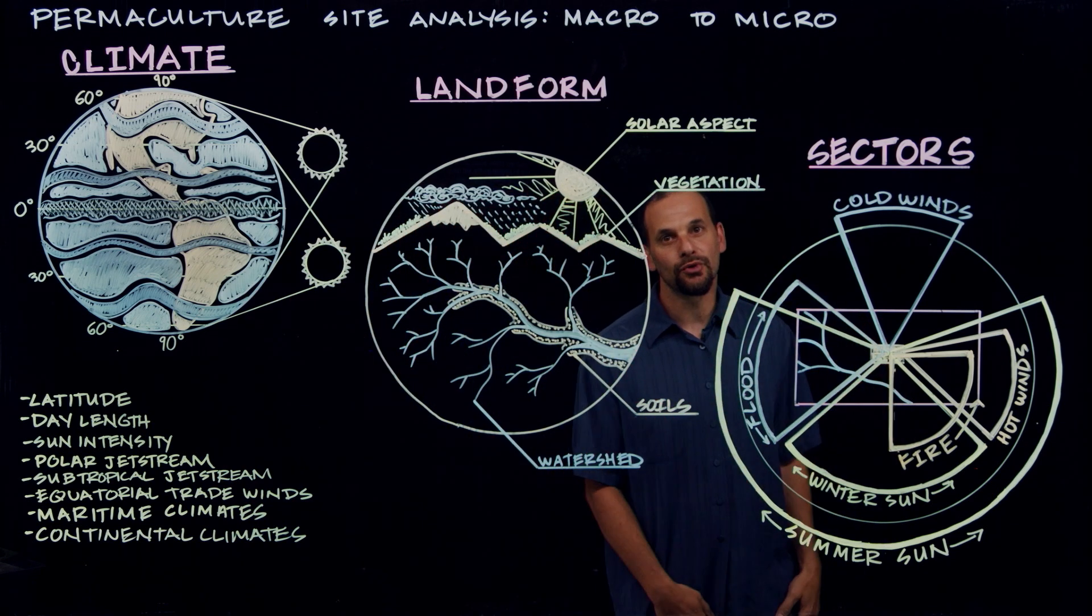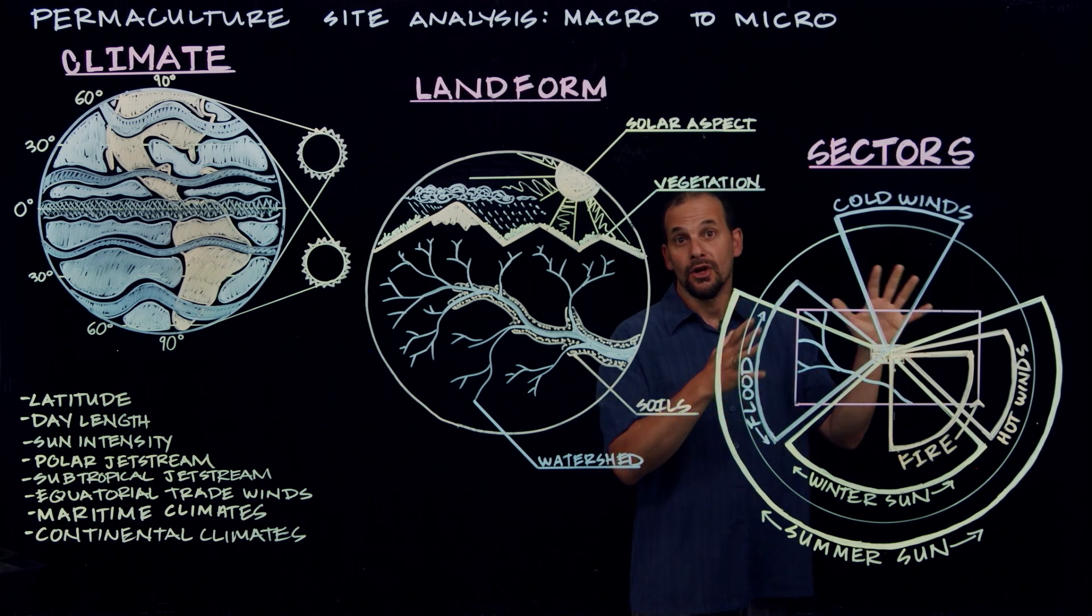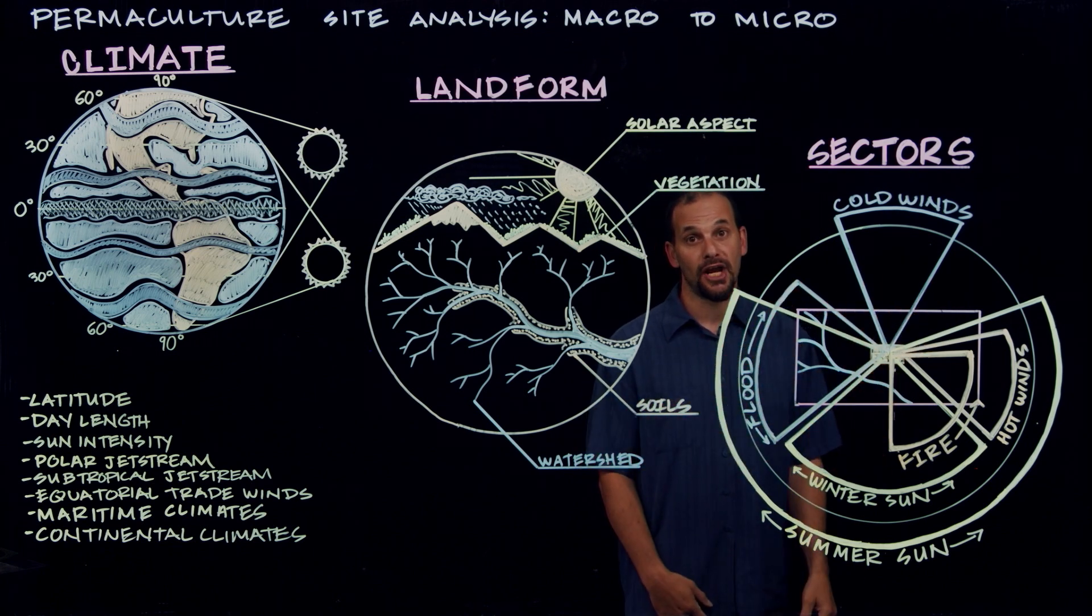At this close scale here, we can map the actual details of our site. Where the water flows during the rains. Where trees and buildings cast shade.